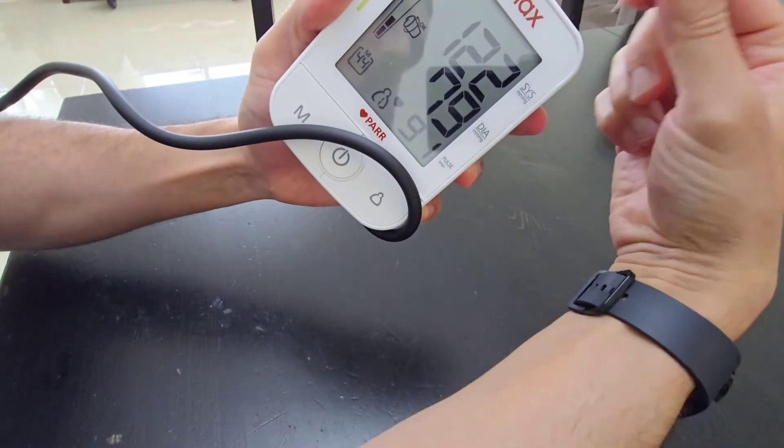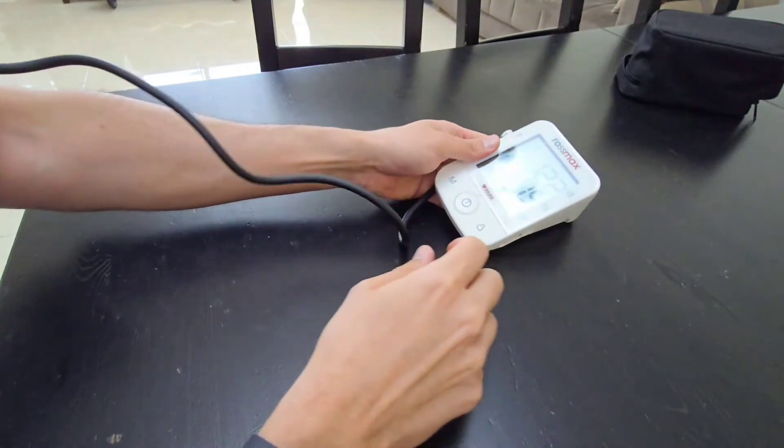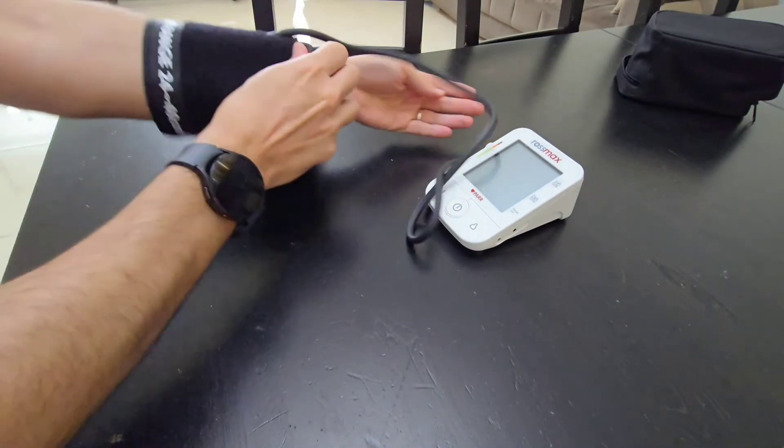Now let's go ahead and test it when I exercise. I'm going to go ahead and activate the boxing mode on the watch. So, let's increase my heart rate.